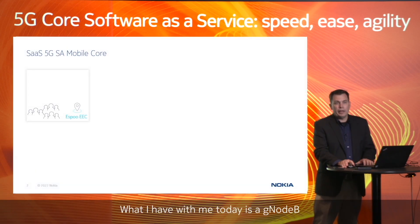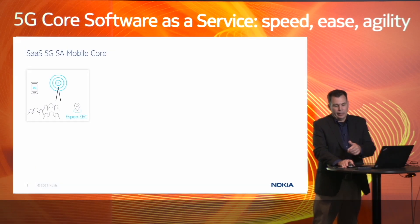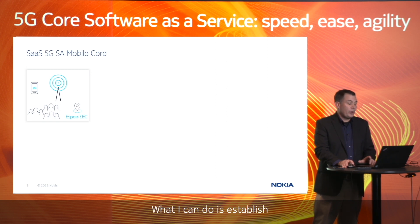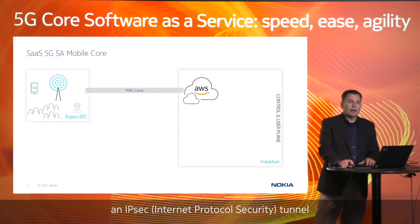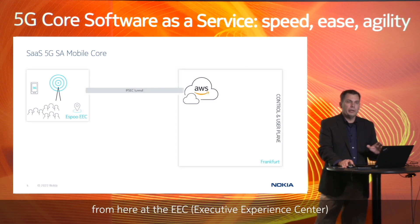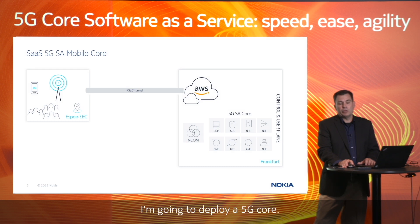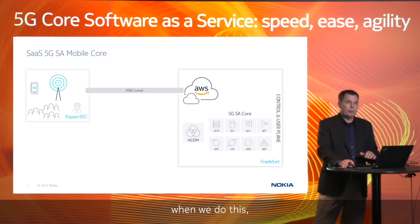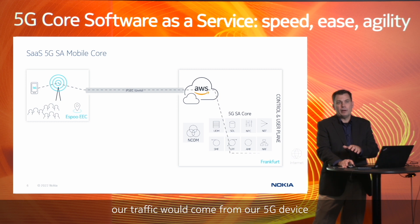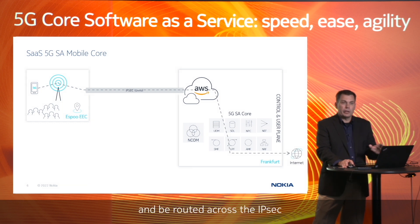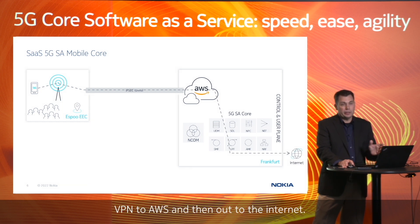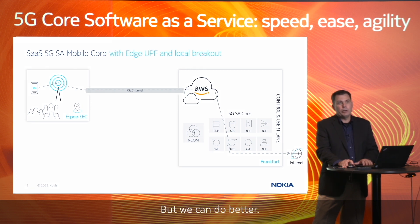What I have with me today is a GNodeB and a 5G device. What I can do is establish an IPSec tunnel from here at the EEC to AWS, sitting in Frankfurt, Germany. Over in AWS, I'm going to deploy a 5G core. Now typically when we do this, our traffic would come from our 5G device and be routed across the IPSec VPN to AWS and then out to the internet. But we can do better.